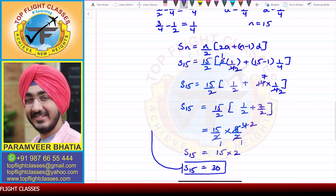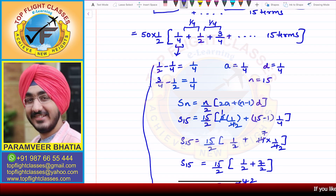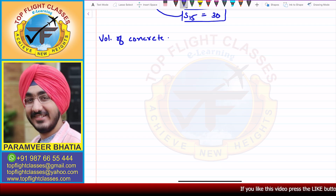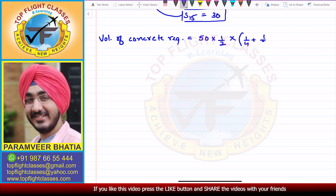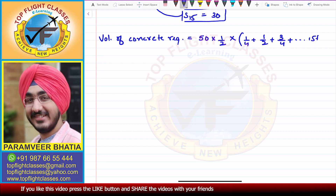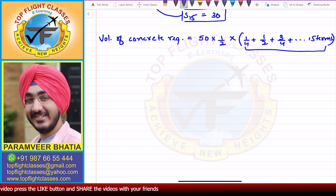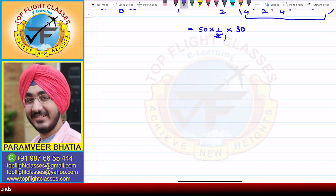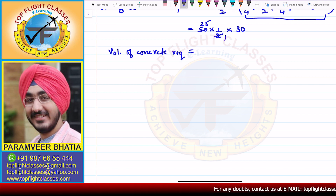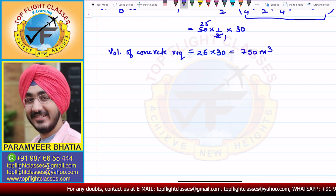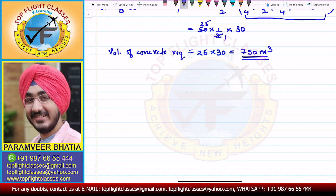Now we use this result in our volume formula. Volume of concrete required = 50 × 1/2 × (1/4 + 1/2 + 3/4 + ... up to 15 terms). This value has come out to be 30, so we get 50 × 1/2 × 30 = 25 × 30 = 750 meter cube. So 750 m³ is the volume of concrete required to build the whole terrace.